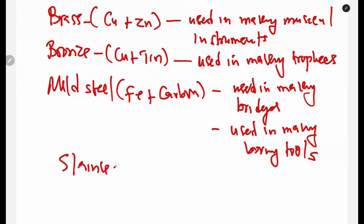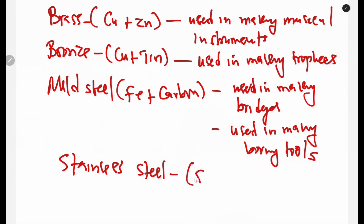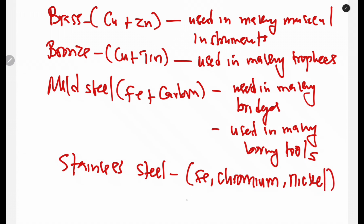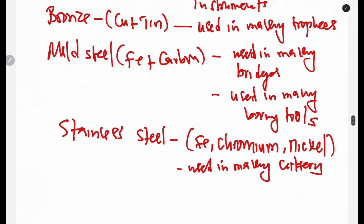Then we have stainless steel, which is an alloy of iron with chromium and nickel. It is used in making cutlery such as knives and razor blades, because it does not rust.